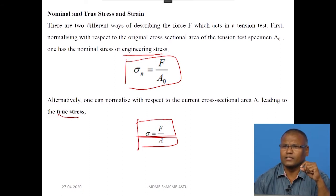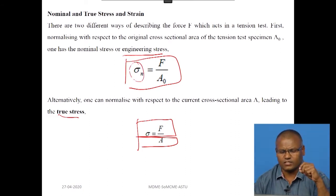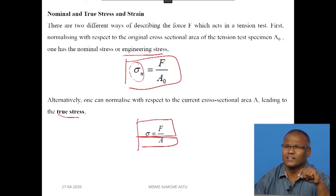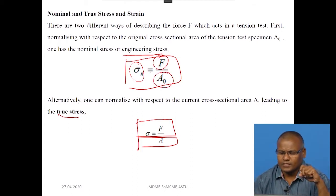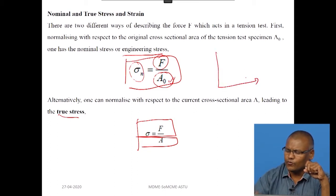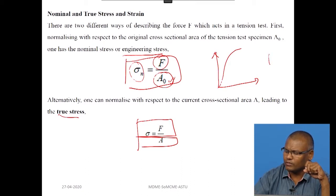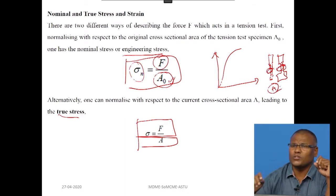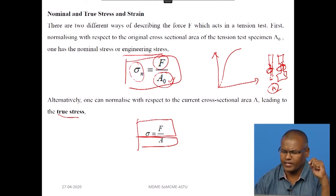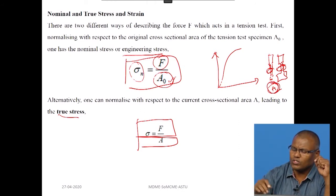For the engineering stress aspect, it explains that the nominal stress sigma_n represents the nominal stress equal to force divided by the original cross-sectional area. When you take the stress-strain curve of any material, whether a cylindrical or rectangular sample, once you calculate the initial area of the specimen, this area will not change throughout the test when calculating engineering stress.